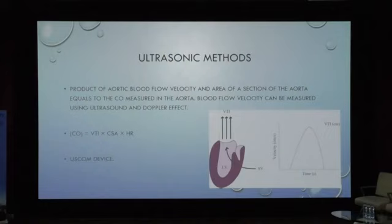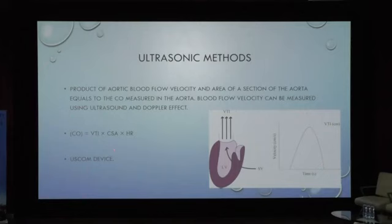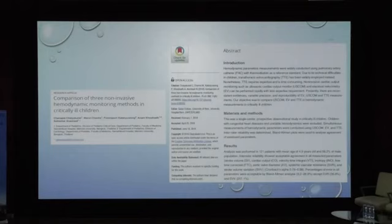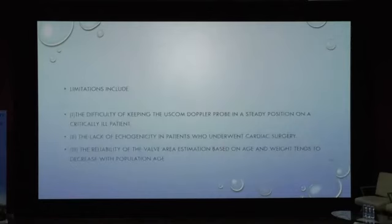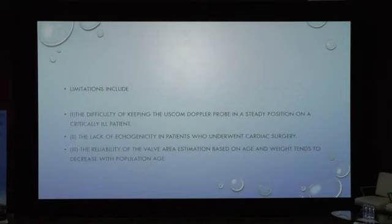Ultrasonic methods use the product of aortic blood flow velocity and cross-sectional area of the aorta to calculate cardiac output, with blood flow velocity measured using ultrasound and the Doppler effect. The USCOM device is mainly used in children and was validated against the PA catheter in three invasive tests, showing reliability. Limitations include difficulty keeping the Doppler probe steady in critical care patients, lack of echogenicity in some patients, and decreasing reliability of valve area estimation with increasing patient age.